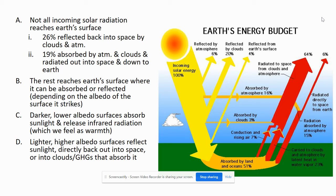Surfaces that are lighter and have very high albedo reflect sunlight back into space or into the clouds, where greenhouse gases then absorb it. In that surrounding area it feels much cooler — hence why the North and South Poles, which have lots of snow, have a very high albedo with lots of reflected light, maintaining the cooler temperatures we see there.